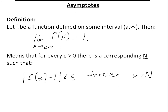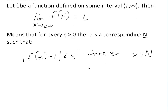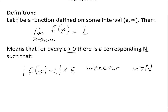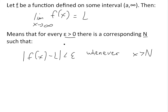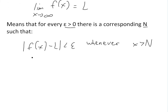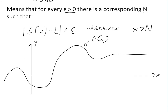This is a similar definition to the precise definition of a limit shown in the video link below. It may sound a bit abstract, but it's pretty straightforward once you look at it visually. So if we look at this random f(x) function, which has a limit at infinity — as you can see, it's approaching some limit value.